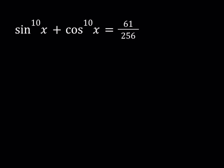We have sine x to the 10th power plus cosine x to the 10th power equals 61 over 256, and we're going to be solving for x values. I'll start with sine squared x plus cosine squared x equals 1, and then I will raise both sides of this equation to the 5th power.